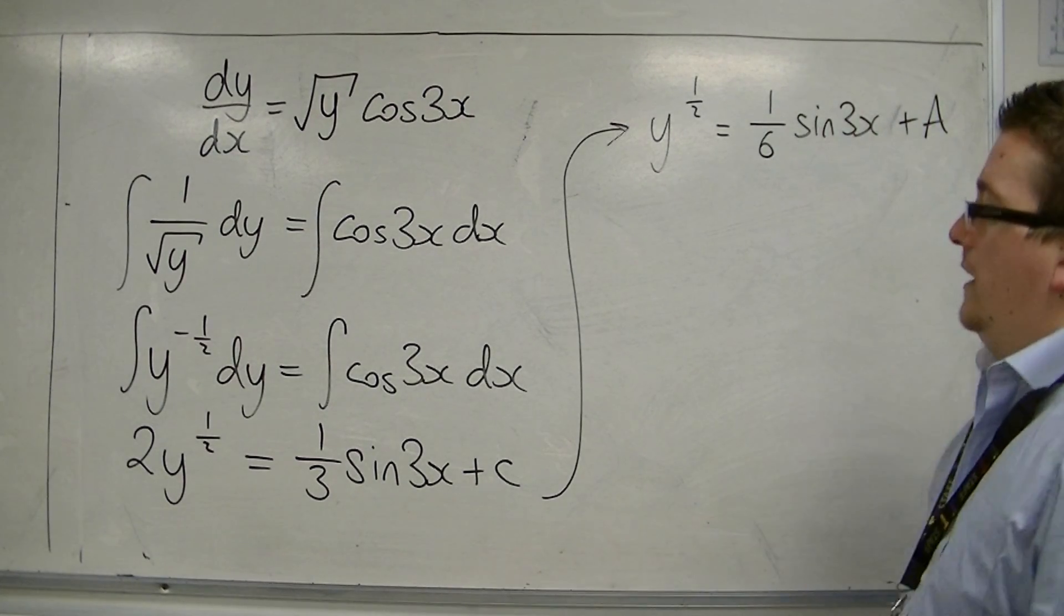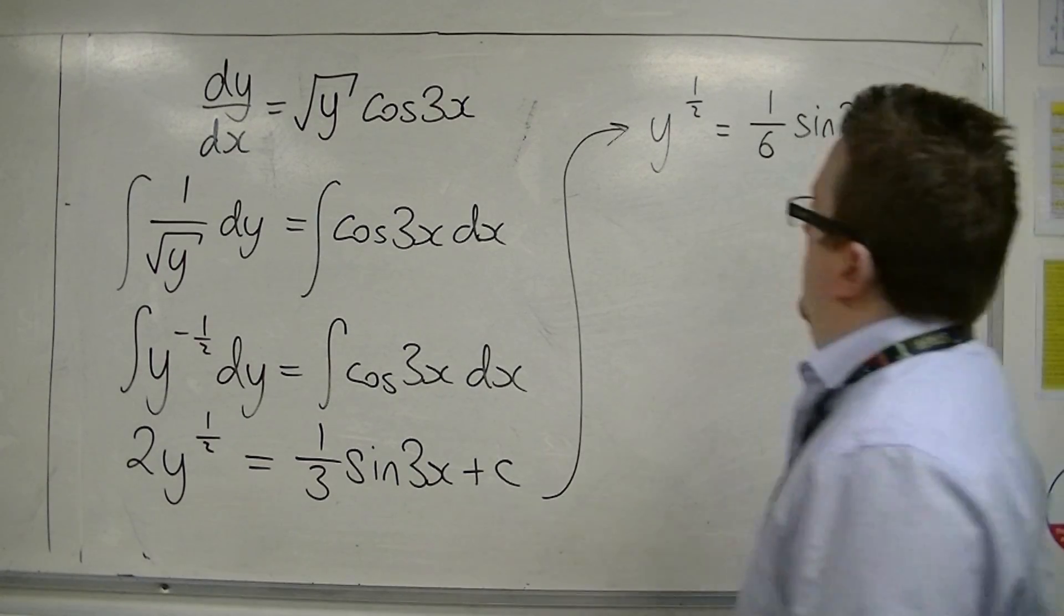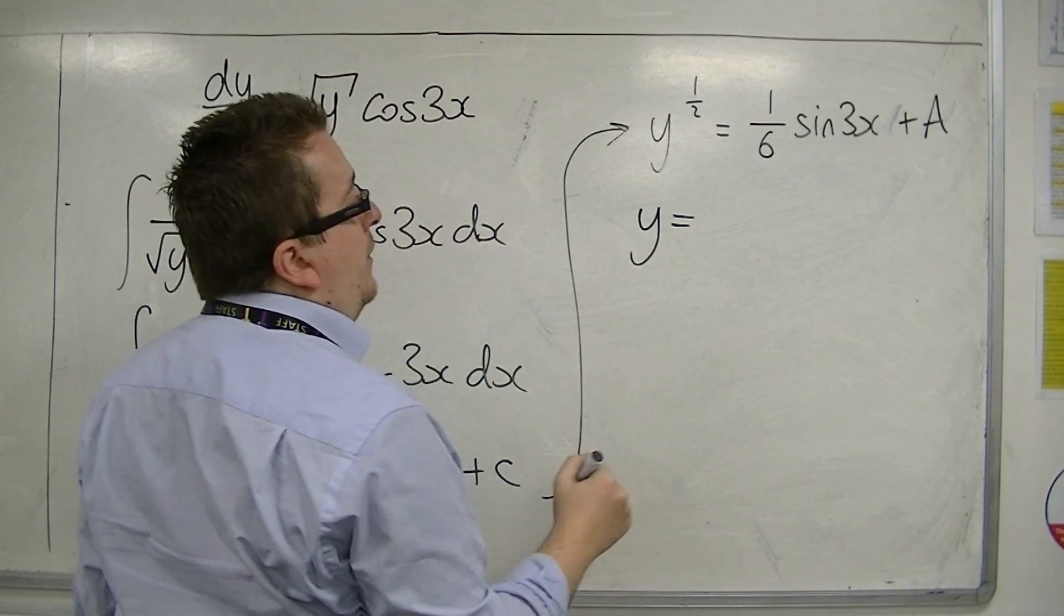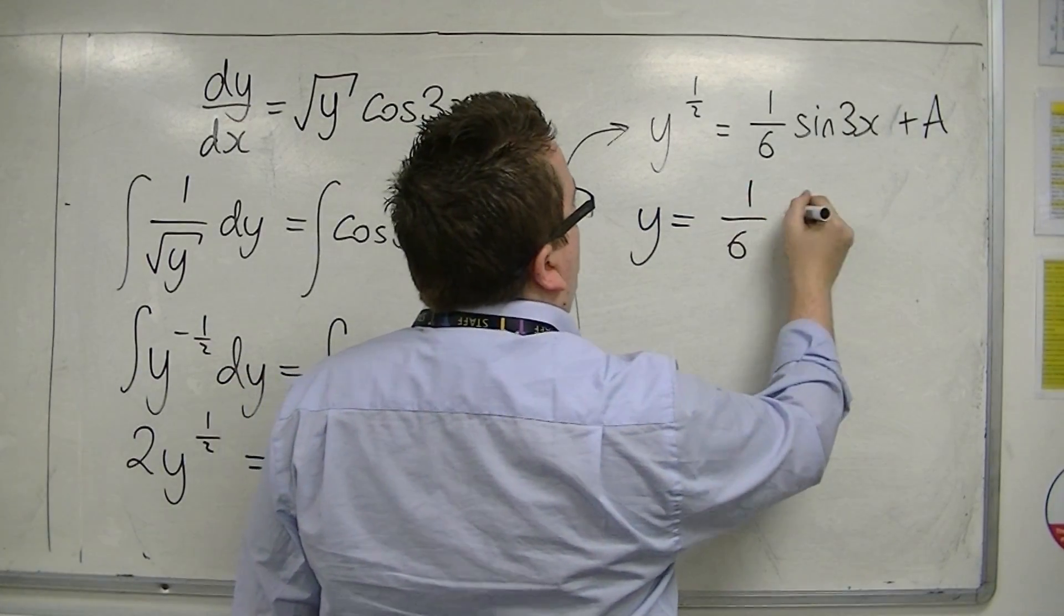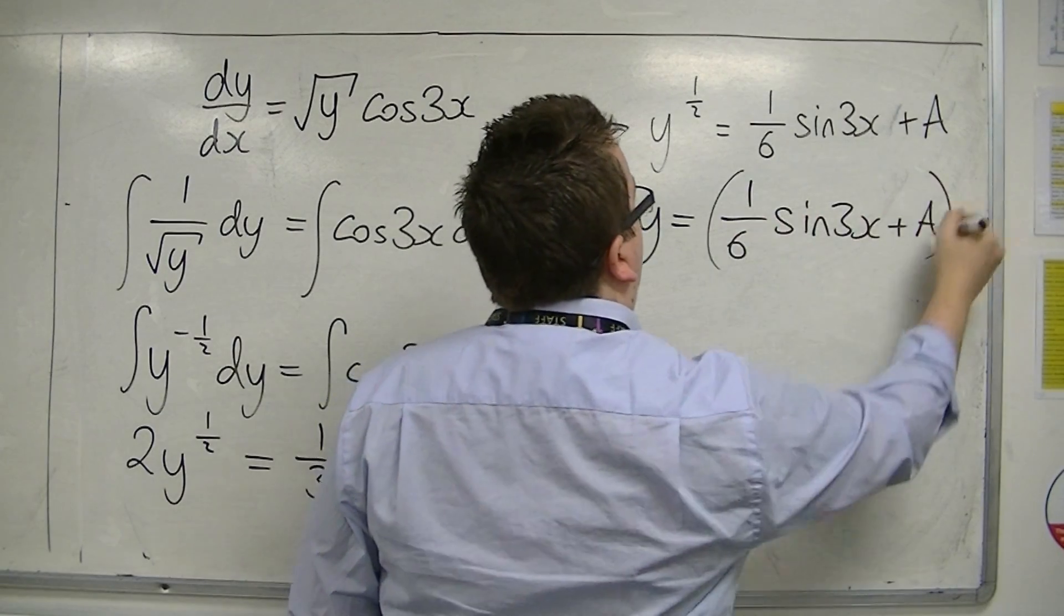Let's choose A. So c divided by 3 is just going to be a capital A here. And then to get y equals, I would have to square both sides: so (1/6 sin 3x plus a constant A) squared.